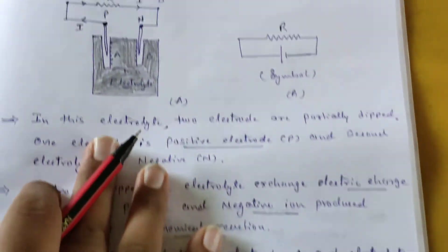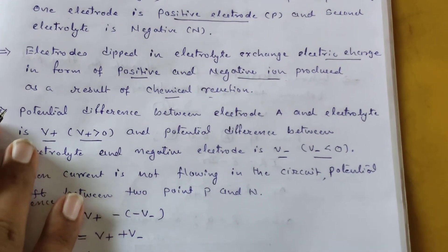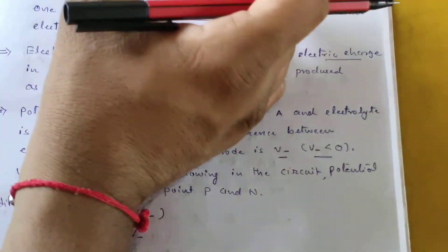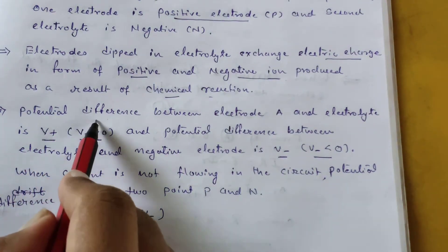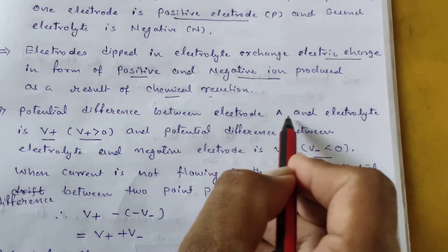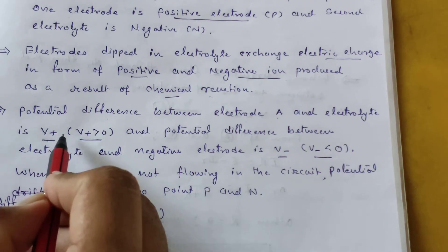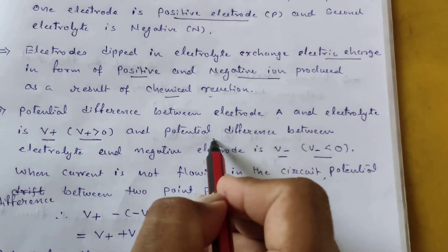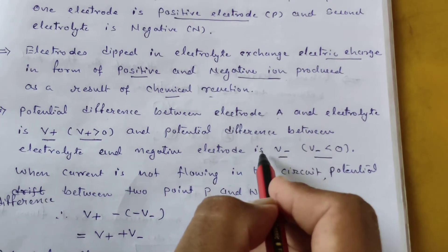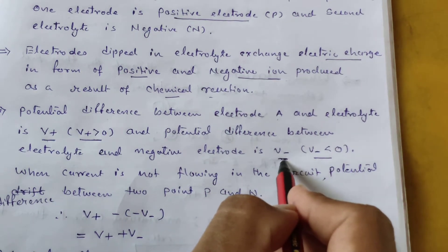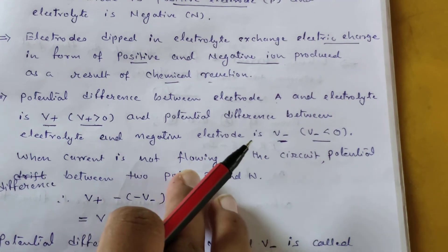Due to the chemical reaction, charges change here. Positive and negative charges are formed, meaning a potential difference is created. Whatever potential difference is created between electrode A and the electrolyte is V+, where V+ is greater than zero. The potential difference created between the electrolyte and the negative electrode is V−, where V− is less than zero.